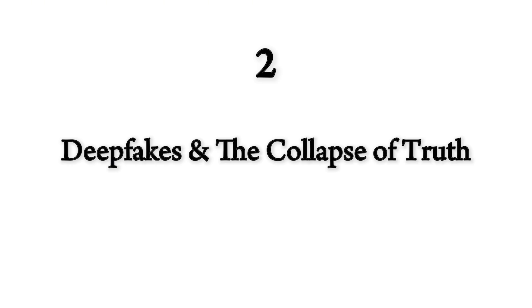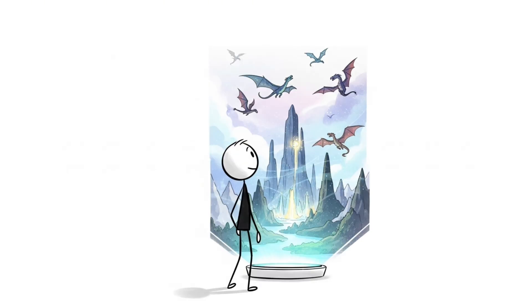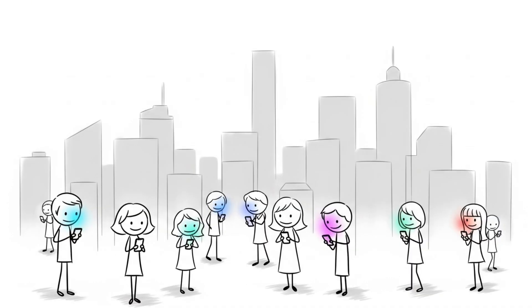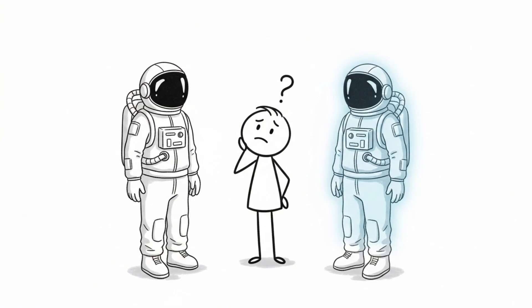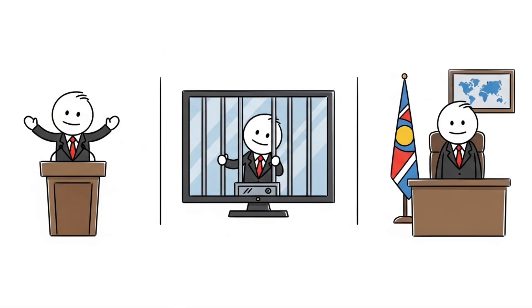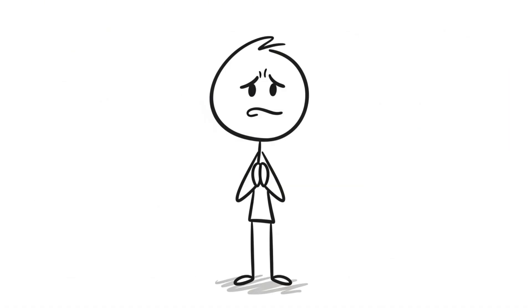Number two, deepfakes and the collapse of truth. You are entering a world where you can no longer trust your own eyes. This is the era of reality apathy, where deepfakes are so convincing that people stop believing anything is real. AI can now generate videos of world leaders saying things they never said, confessing to crimes they didn't commit, and declaring wars that aren't happening. This isn't hypothetical.